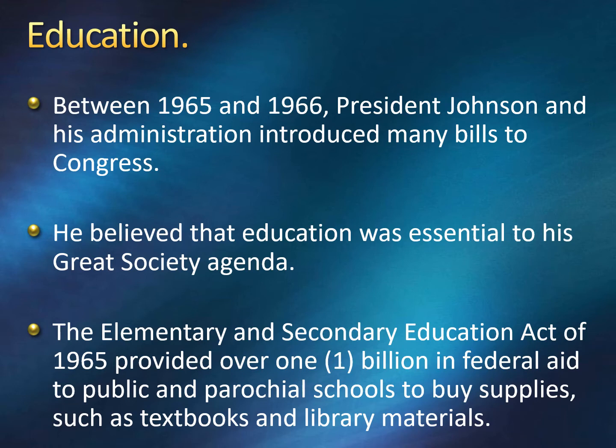Between 1965 and 1966, President Johnson and his administration introduced many bills to Congress. They believed that education was essential to his Great Society agenda. Johnson was a former school teacher from Texas, so education was a topic that was passionate and dear to his heart. The Elementary and Secondary Education Act of 1965 provided over $1 billion in federal aid to public and parochial schools to buy supplies such as textbooks and library materials.